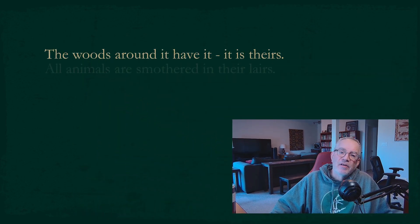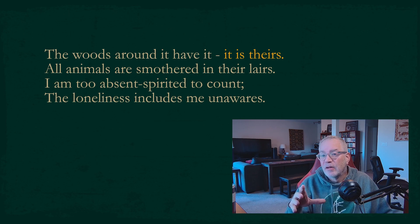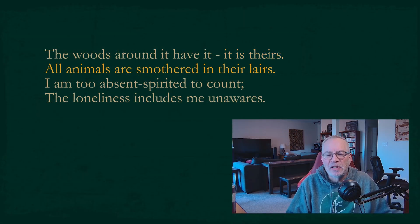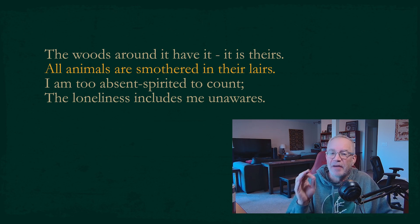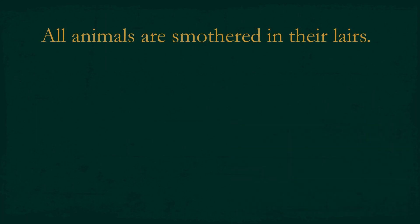Let's move on into the next stanza. The woods around it have it — it is theirs. All animals are smothered in their lairs. I am too absent-spirited to count, then loneliness includes me unawares. There are woods around the field, and the field is theirs — kind of like being excluded. It's really bad when the trees are excluding you. And then the line, all animals are smothered in their lairs — this is a great example of how word choice, or diction, can create a tone. Consider how different it would feel if it said: All animals are cozy in their dens.